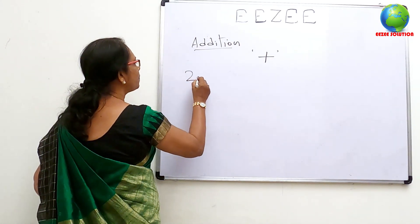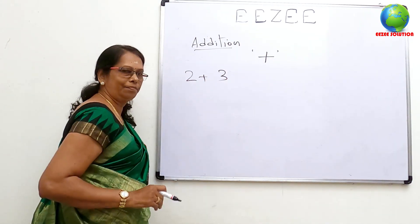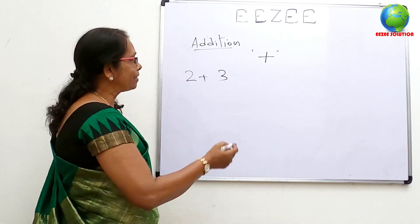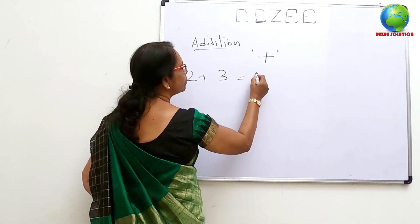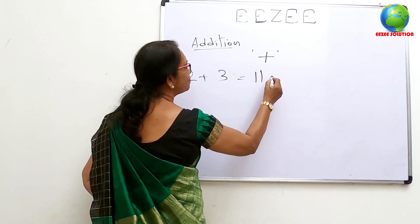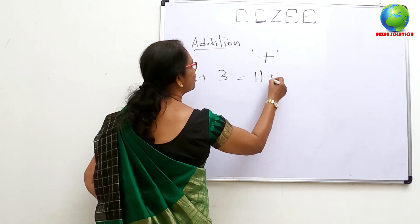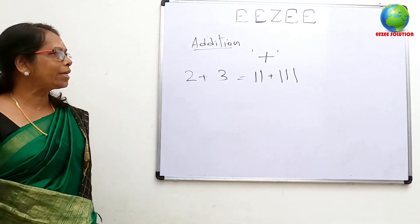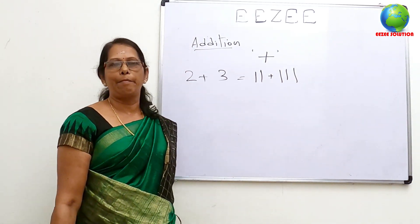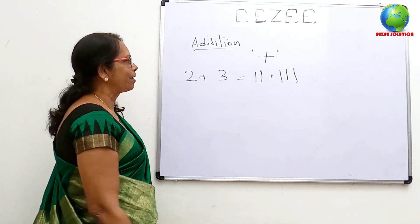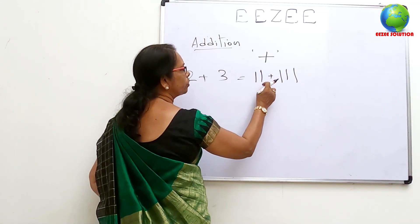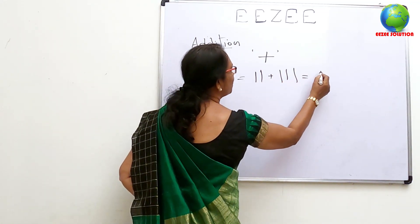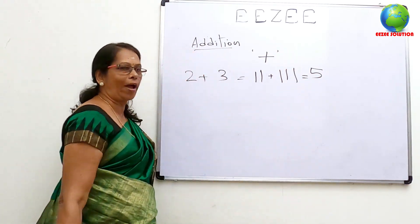That means 2 plus 3. This is the total number. Total number is 1, 2, 3, 4, 5. That is 5.